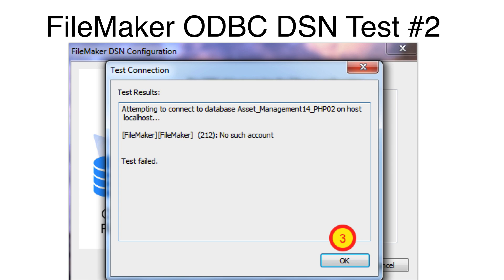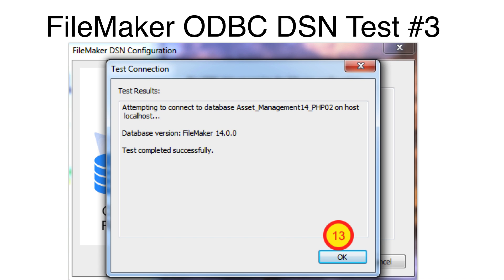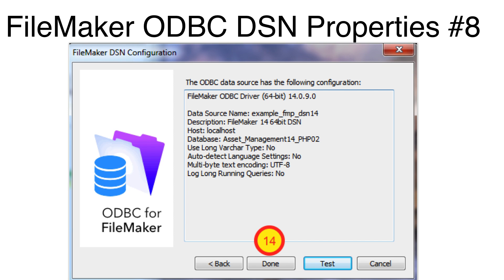Unless this test passes, FMPro Migrator will be unable to login to the FileMaker database. For some types of errors, it is necessary to restart your computer and try again. Once the test passes, click the OK button, then click the Done button. Now repeat this same process again using the 32-bit ODBC Administrator, creating the 32-bit ODBC DSN with the same name and settings.